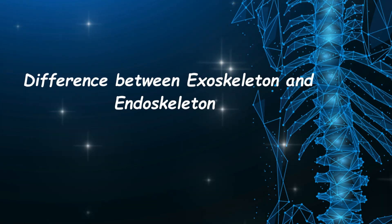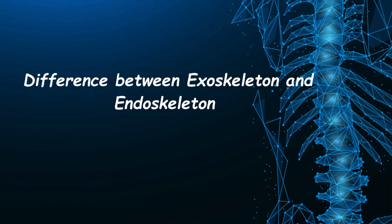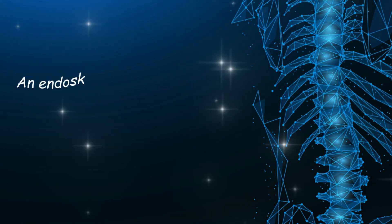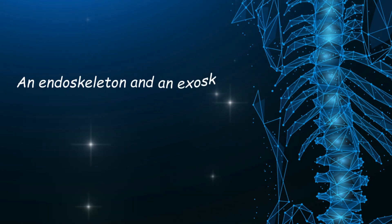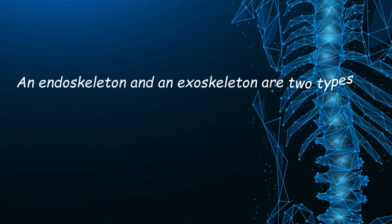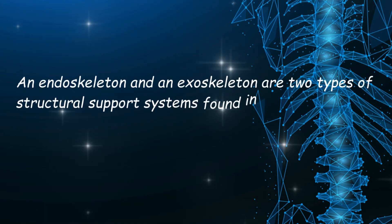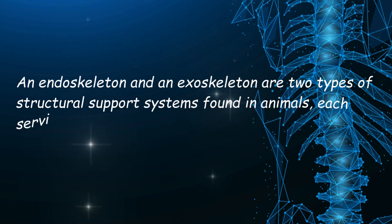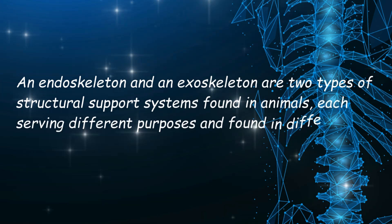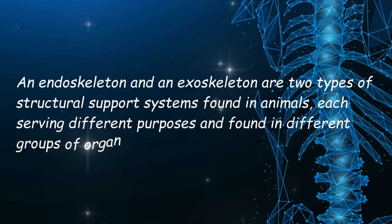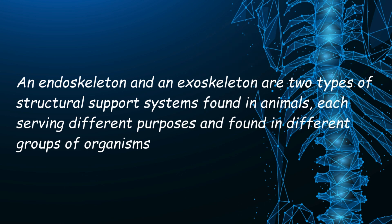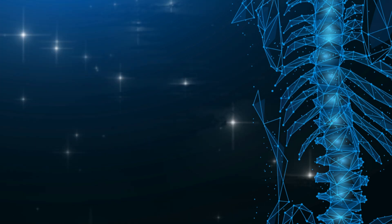Hello kids. Today we are going to learn about the difference between exoskeleton and endoskeleton. Endoskeleton and exoskeleton are two types of structural support systems found in animals, each serving different purposes and found in different groups of organisms.